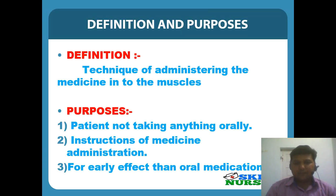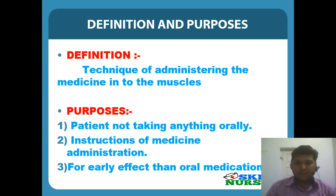Intramuscular injection is a technique of administering medicine into the muscles. The purposes of intramuscular injection include: some patients do not take anything orally or they vomit the drug, so we have to give intramuscular injection. Some medications are prepared to be given intramuscularly only because they get destroyed in the gastric juice. Some patients prefer early absorption of the drug, so we have to administer intramuscular injection.